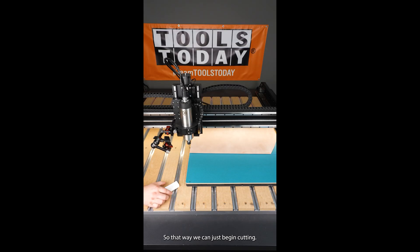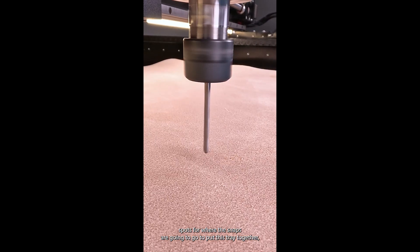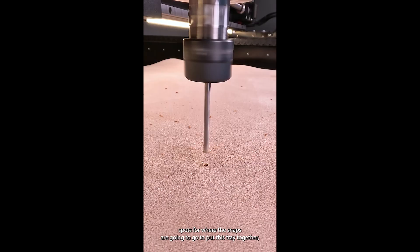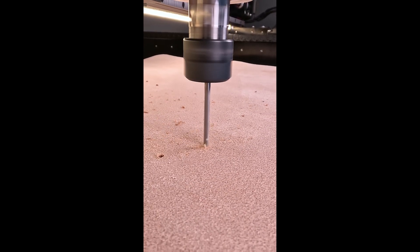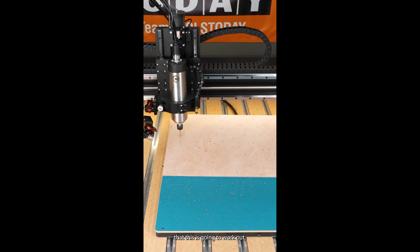That way we can just begin cutting. I'll get the vacuum turned back on and we can start drilling out all of those spots for where the snaps are going to go to put this tray together. Because we have everything set in the design, we can be sure that this is going to work out.